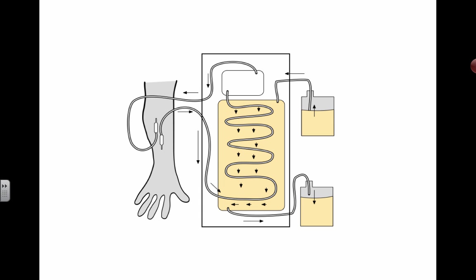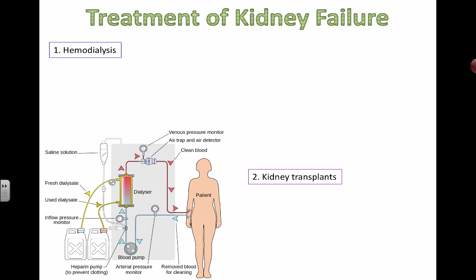You want to get stuff into the blood that you need, and get stuff out of the blood that the kidney is supposed to remove. The used dialysate is dumped out and fresh dialysate flows in to keep the concentration gradients steady, so molecules continue to flow in the right direction — either into the blood or away from it.